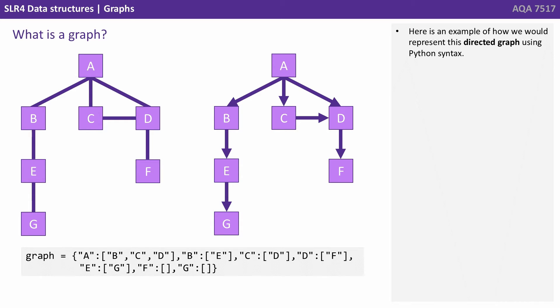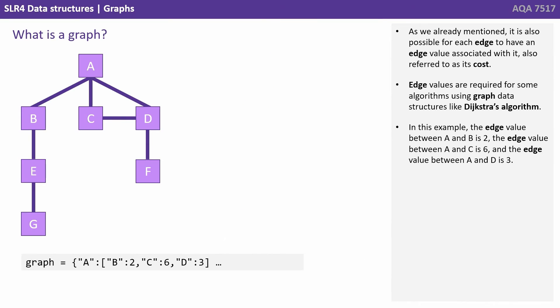As we already mentioned, it's also possible for each edge to have what we call an edge value associated with it, also referred to as the cost. Edge values are required for some algorithms using graph data structures, like Dijkstra's algorithm.